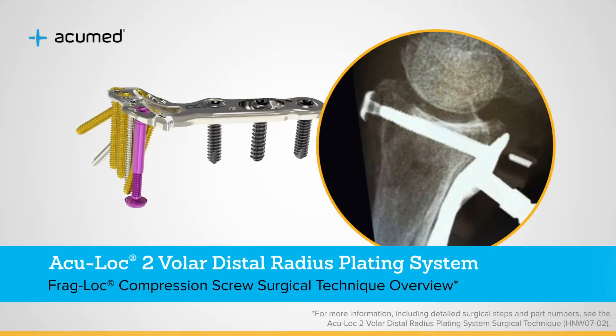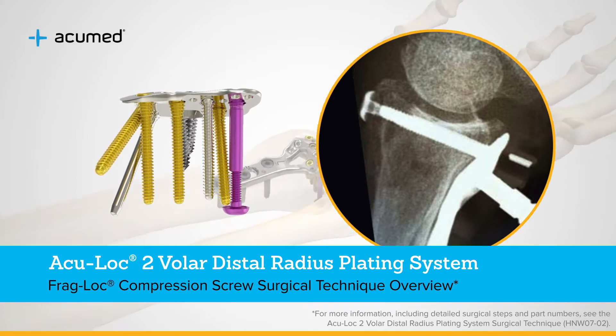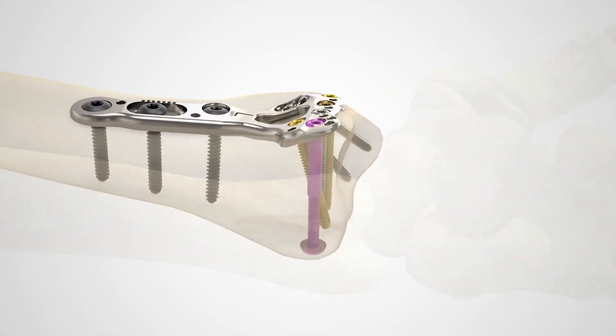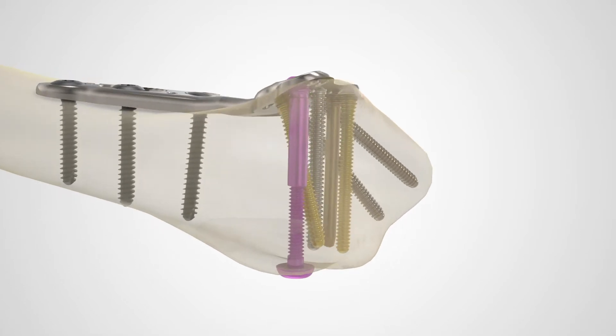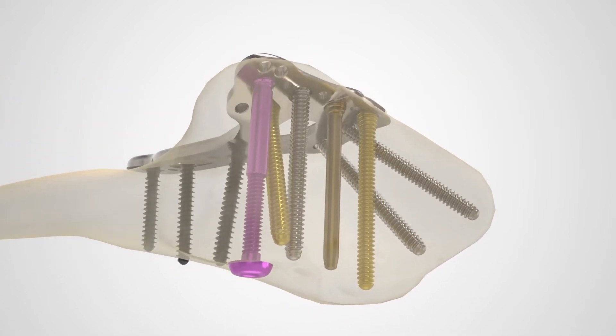The FragLock compression screw is a two-part cannulated screw designed to reduce dorsal fragments to the AccuLock II VDR plates, distal radius fragment-specific plates, volar lunate suture plate, AccuLock VDR plates, and AccuLock EX plates.